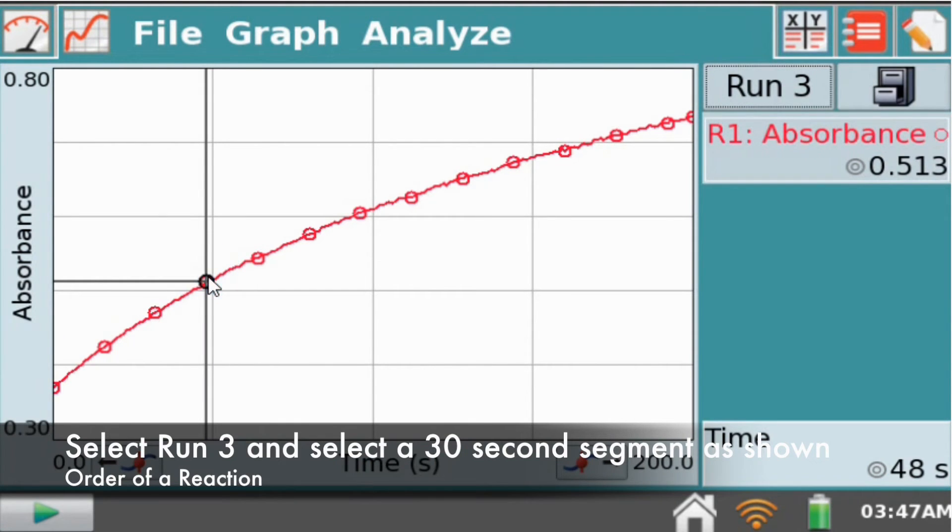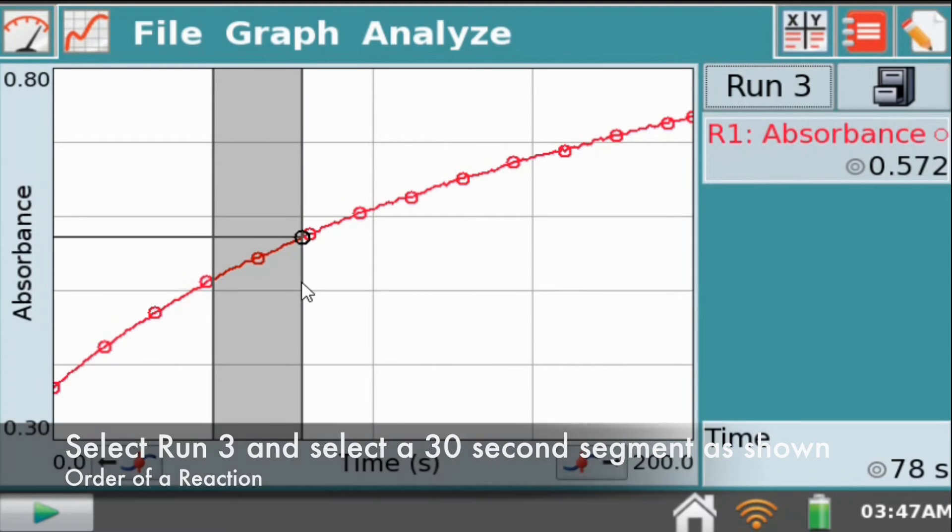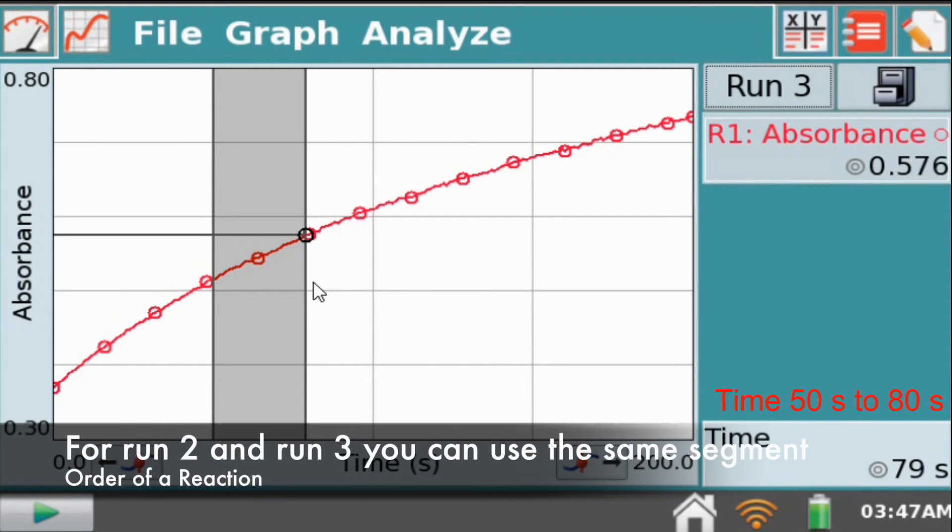In order to determine the rate of a reaction for a 30 second segment, we will first select a region on the graph as shown. On the lower right corner, time is displayed in seconds. You can use this as a guideline for the time segment. Here, we have chosen a 30 second segment starting from 50 seconds to 80 seconds.